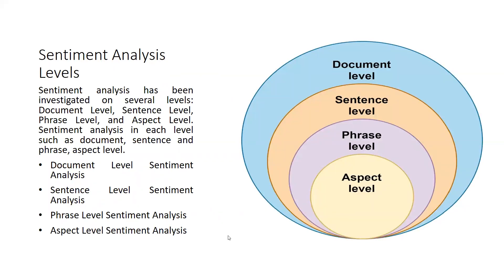When we talk about the levels of sentiment analysis, it is categorized into four categories. The broadest concept is the document level, followed by sentence level, phrase level, and aspect level. We are going to discuss all these levels one by one.